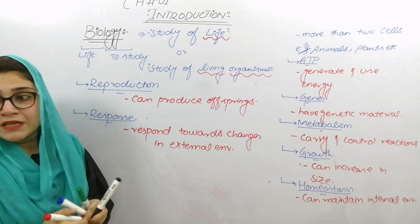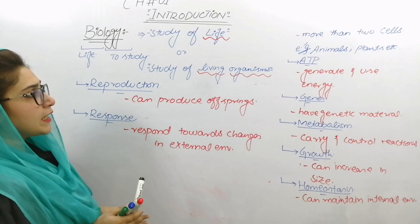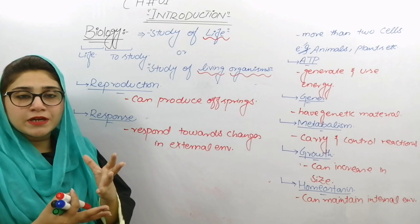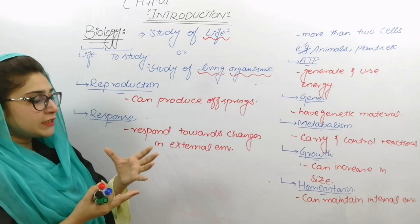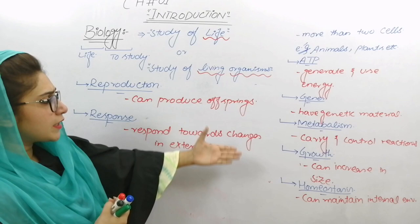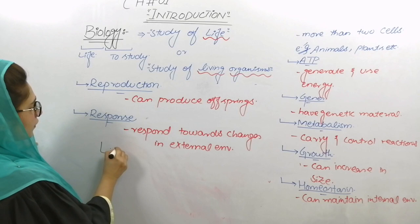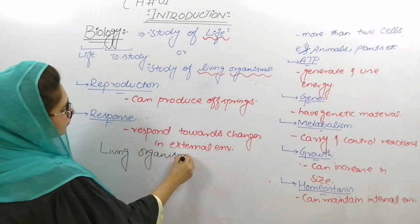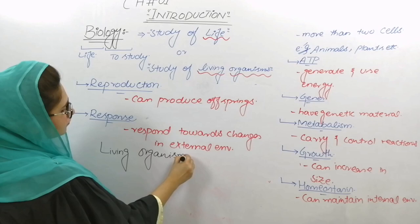अब ये चीजें हमने discuss कर ली — Life के characteristics क्या होती है۔ Life is a set of characteristics which differentiate between living and non-living things — यानि एक ऐसी خصوصیات کا سیٹ जो living things को non-living things سے separate करती है۔ हमने बहुत सारे characteristics पड़े हैं۔ अब Living Organism को define करते हैं — کوئی بھی ایسی شے जिसमें ये सारे characteristics بیک وقت पाए जाएं उसे हम Living Thing کہتے ہیں۔